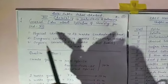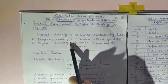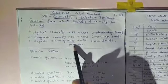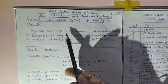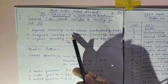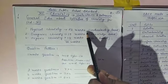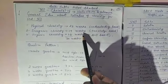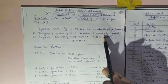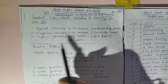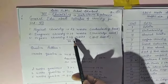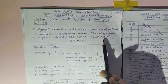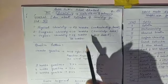As we know, chemistry is divided into 3 parts: physical chemistry, inorganic chemistry, and organic chemistry. In the CBSE syllabus, physical chemistry is of 23 marks and it is understanding-based. Inorganic chemistry is of 19 marks and it is knowledge-based. Organic chemistry is of 28 marks and it is skill-based — altogether 70 marks.